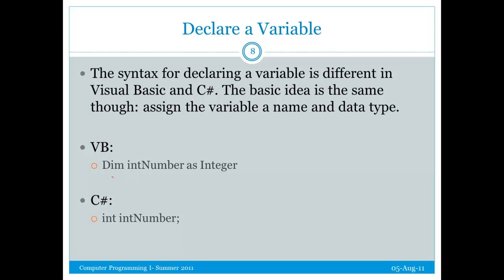Alright, so the syntax for declaring a variable starts with the keyword dim, then we have the name of the variable, then we have the as keyword, and then we have the data type. All four of those elements are required to properly declare a variable. Dim, variable name, as, data type.